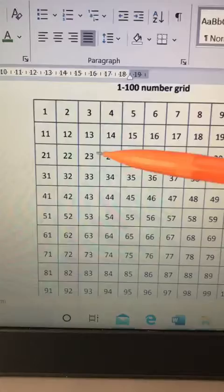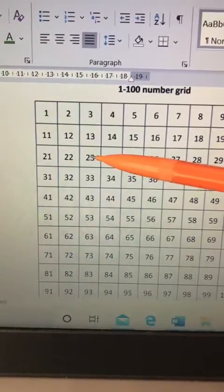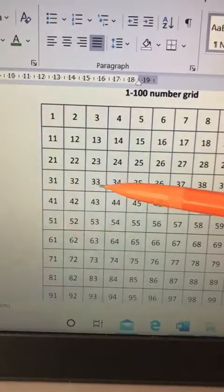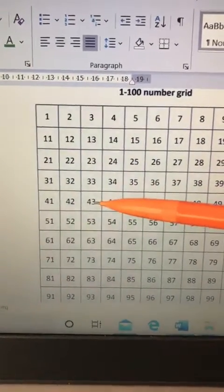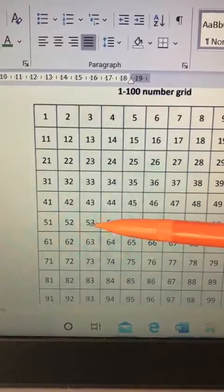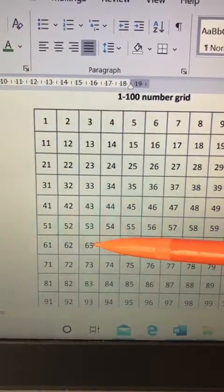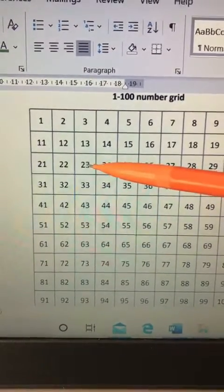So if I start on the number 23, if I move down one row, that's adding 10. We've just done that. If I move down two rows, that's adding 20. If I move down three rows, that's adding 30. And if I move down four rows, that's adding 40. So let's go back up to 23 and see how we go.